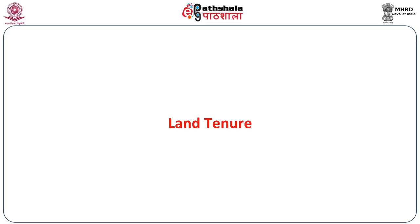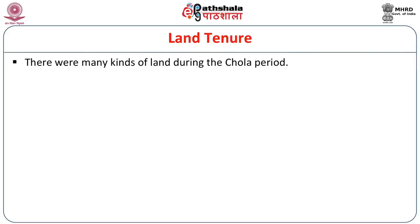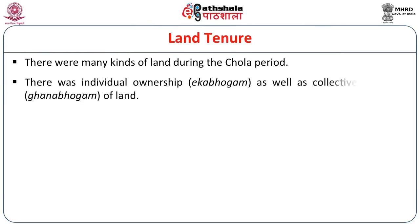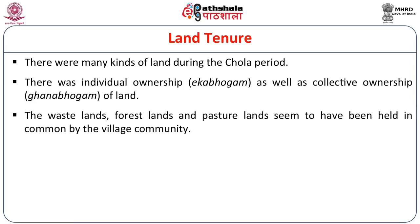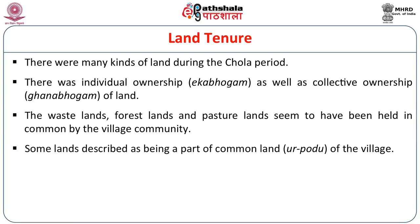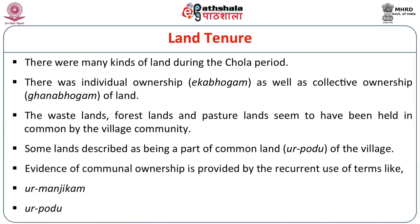In the agrarian history of the Cholas, we discuss the land tenure pattern of South Indian history. There were many kinds of land during the Chola period — both individual ownership rights (Yeha Boha rights) and communal ownership rights (Jnana Boha rights). Waste land, forest land, and pasture lands were held in common by village communities, and some land described as common land is mentioned in South Indian inscriptions as Urpudu of the village.